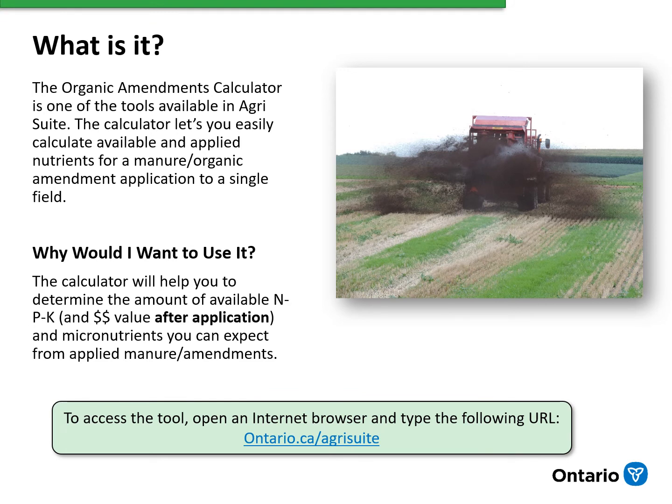Have you ever wondered how much nutrients are being applied with a manure application, or how much money could be saved from using less fertilizer after applying manure? The Organic Amendment Calculator, or the Manure Calculator, is one of the tools in Egrosuite that can easily calculate the available and applied nutrients from a single application. The calculator lets you determine how much nitrogen, phosphorus, and potash, and the economic value after application, as well as the micronutrients that have been applied.